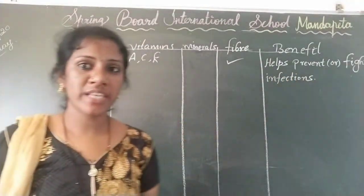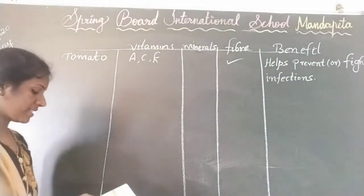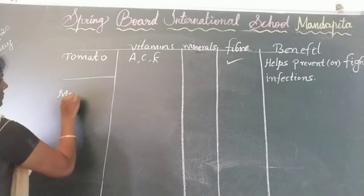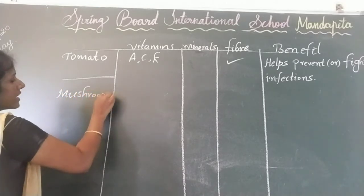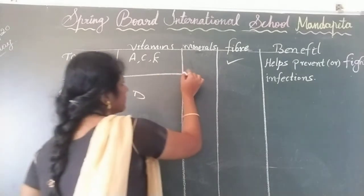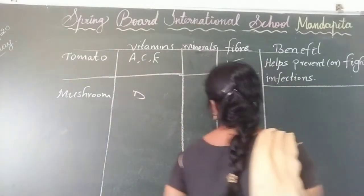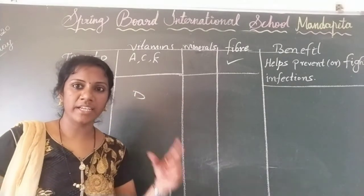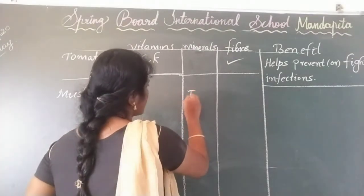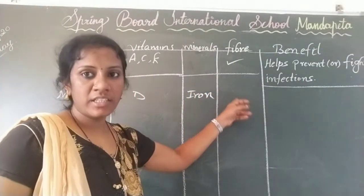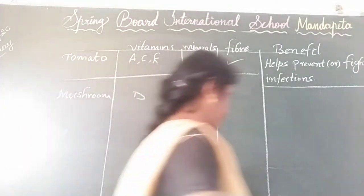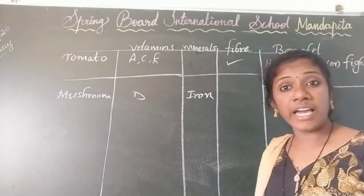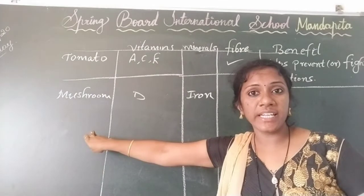Next, mushrooms. Do mushrooms have any vitamins? Yes, mushrooms have vitamin D. And for minerals, mushrooms have iron. Mushrooms don't have fiber. It can keep the bones healthy and helps in having healthy blood. If you are eating mushrooms, you are getting healthy blood.